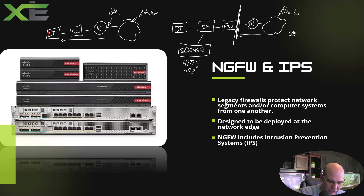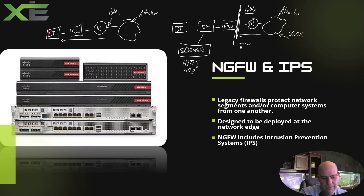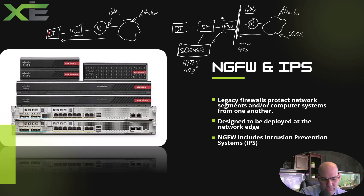Let's say we have a server on our organization's network hosting a website on port 443, which is HTTPS traffic. We have an attacker out here, and also a customer. The customer wants to come to our e-commerce website, so they type our URL, which resolves through DNS to our public address. The firewall sees inbound 443 traffic and says: I'm supposed to send this to that web server and allow it — but I'm not going to send 443 traffic anywhere else in the environment.